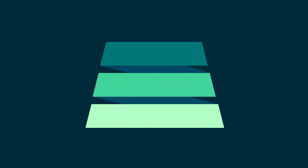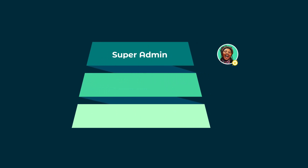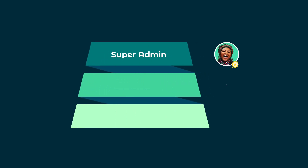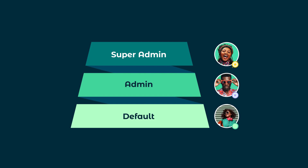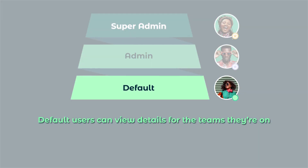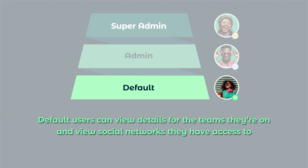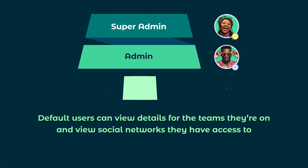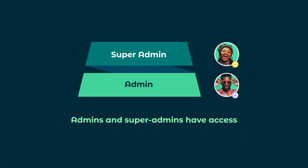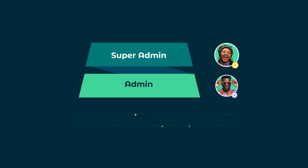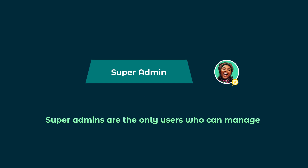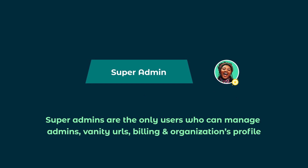Users within an organization can have three levels of permissions: super admins, admins, and default. Users with default permissions can view details for teams they're on and view social networks they have access to. Admins and super admins have access to all social networks, users, and teams. Super admins are the only users who can manage admins, vanity URLs, billing, and your organization's profile.